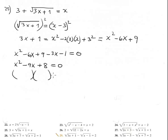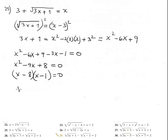Factor the quadratic: the combination is 8 and 1, both negative. Checking confirms the factoring is correct — the solutions are x equals 8 and x equals 1.